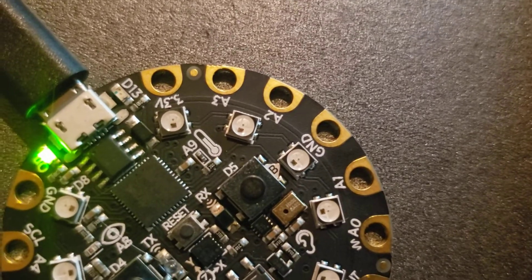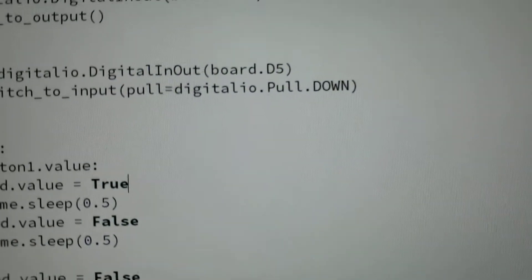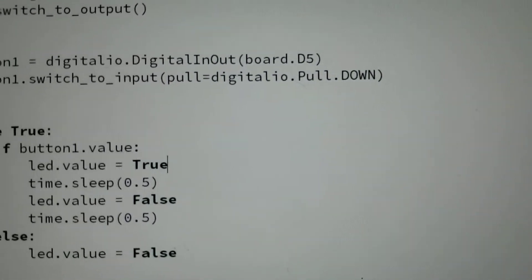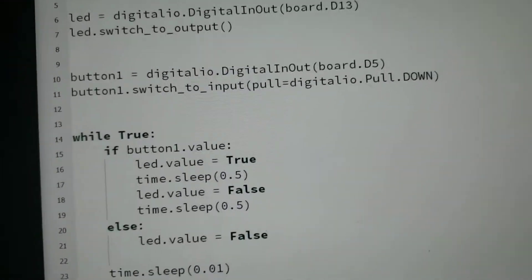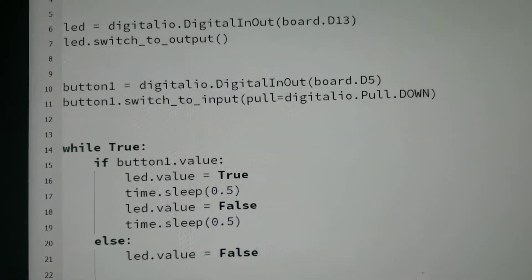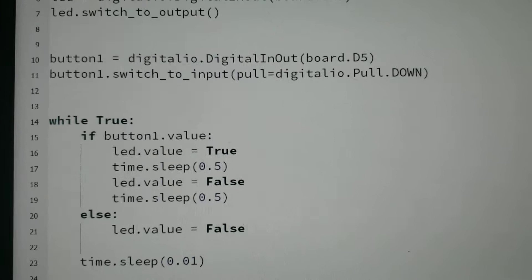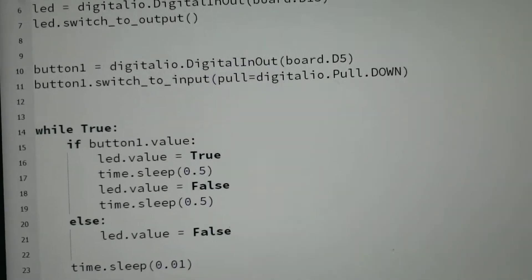As it focuses, there it goes. And I have that as a switch_to_input, and I've got a pull-down resistor on it, and we'll see why I have a pull-down resistor on it.